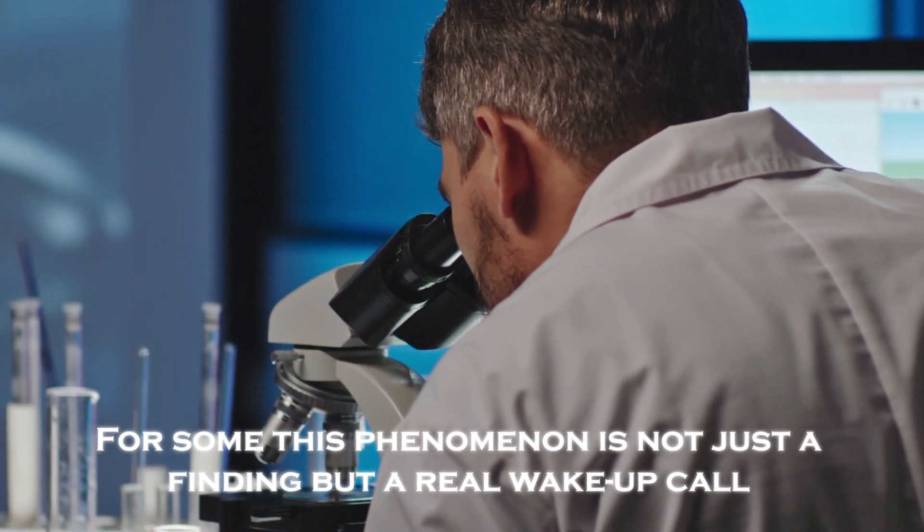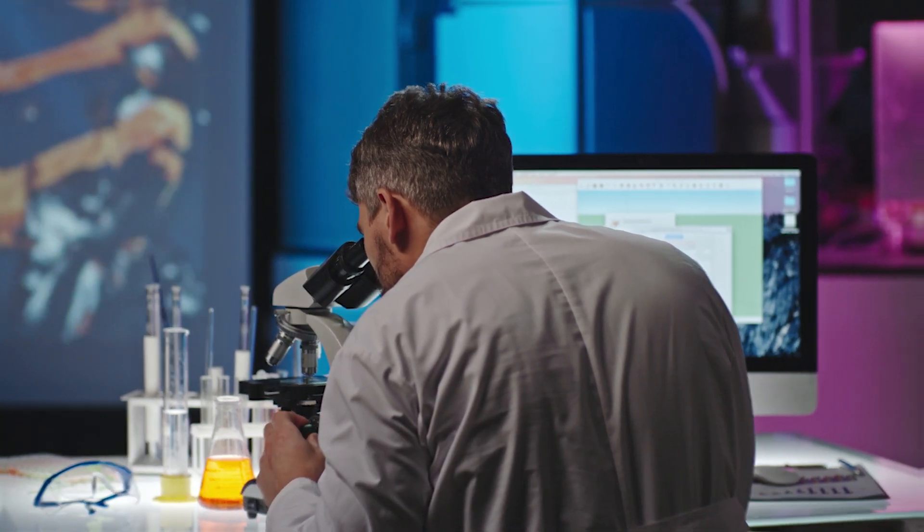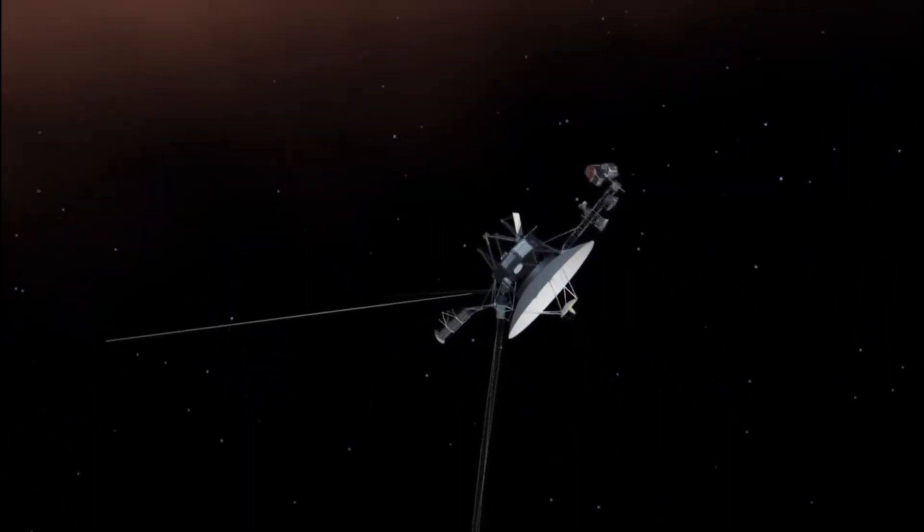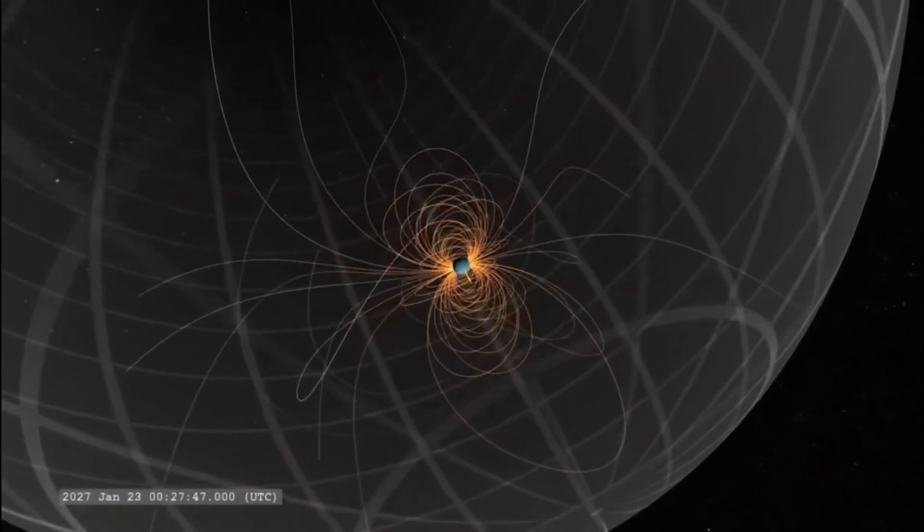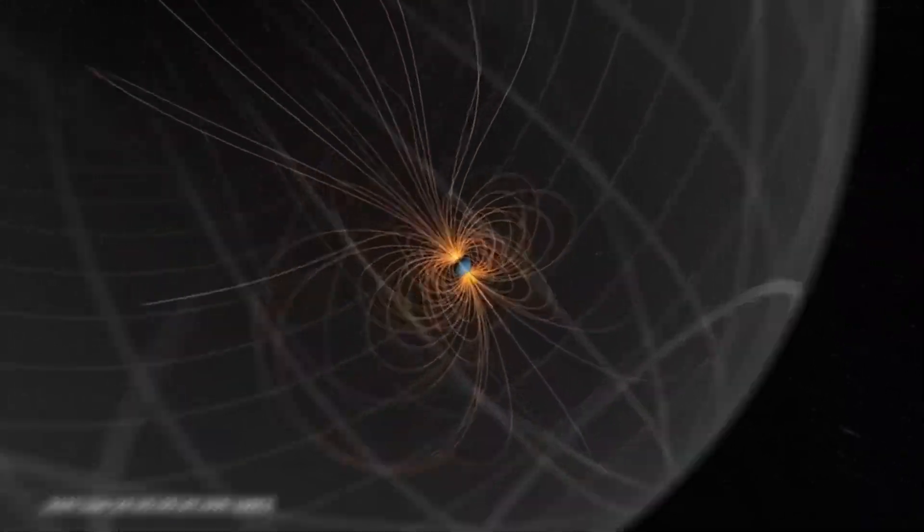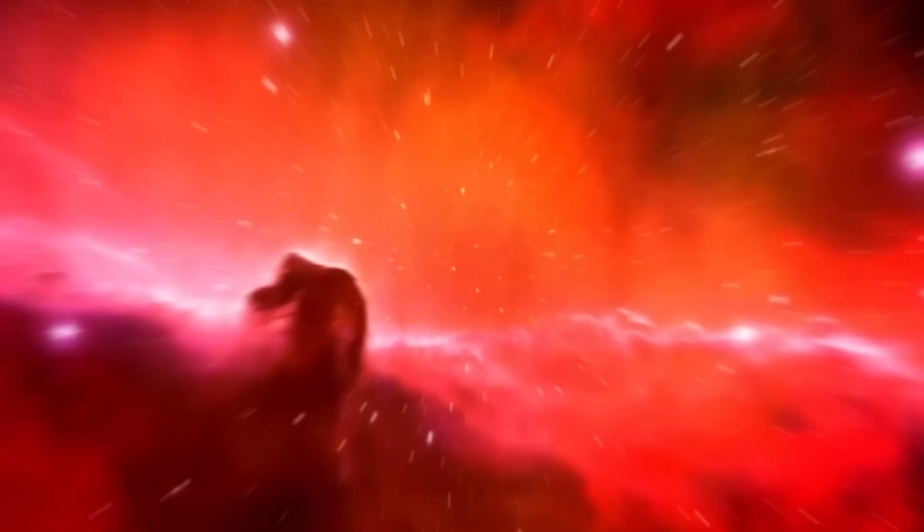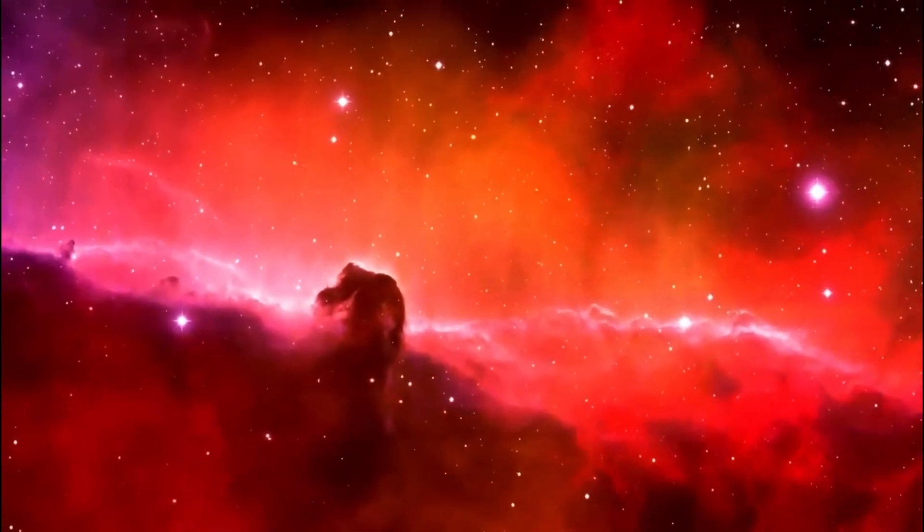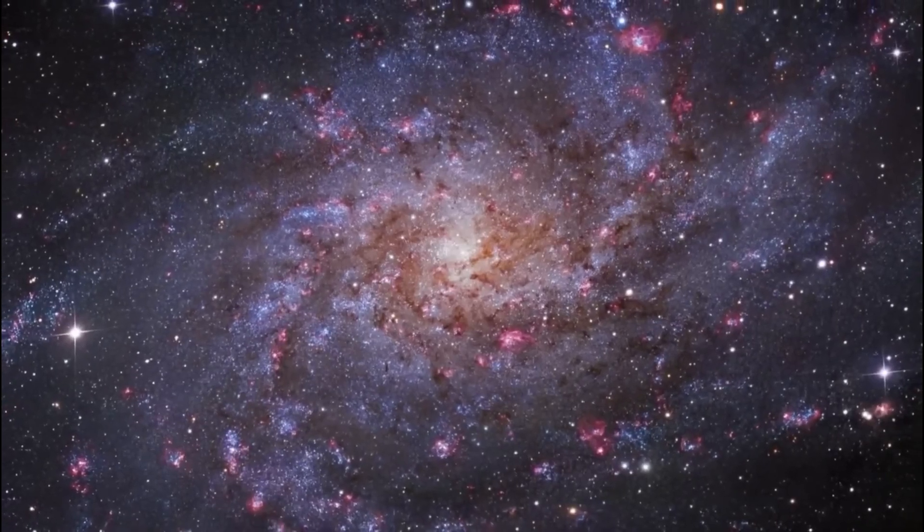For some scientists, this phenomenon is not just a finding, but a real wake-up call. Voyager 1 may be discovering an energy grid or something similar at the edge of our solar system. If these energy streams exist, we are seeing for the first time how the solar system connects to the galaxy on a scale we had not anticipated. This could radically change our understanding of energy in the universe.